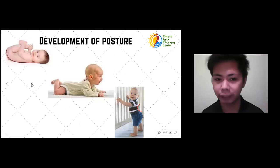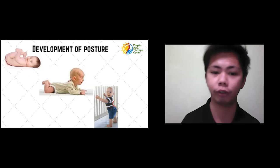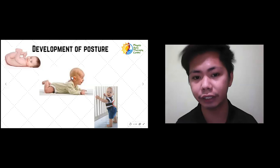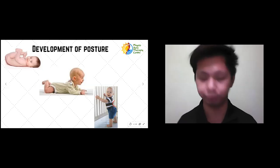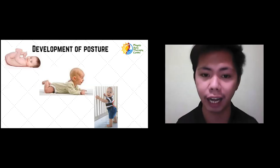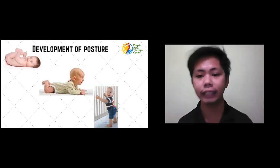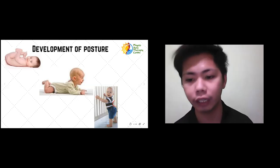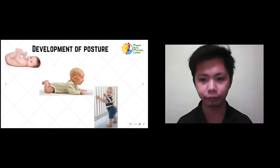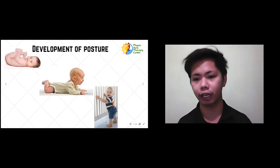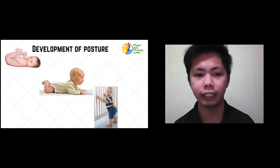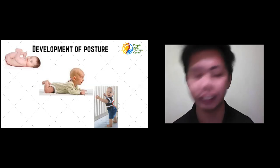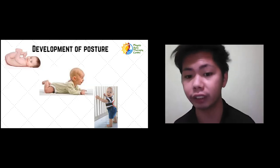Once the baby starts to lift his head off from the floor while lying on his stomach, we develop a second curve — the cervical curve, a hollow curve on the small of our neck. Lastly, when the baby starts to stand and walk, another curve develops, which we call the lumbar or low back curve. These four curves continue into adulthood and are the natural curves that maintain our mobility and spinal stability, helping us in our everyday life.